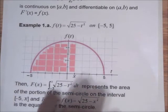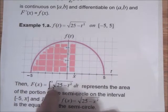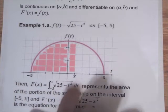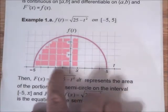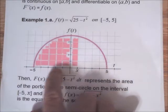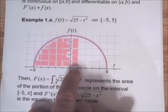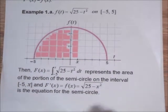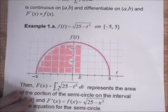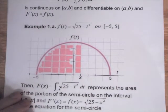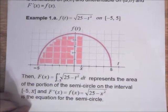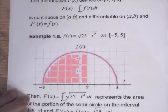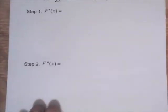The integral capital F of x would be the integral from minus 5 to x of the square root of 25 minus t squared dt, which represents the area under the semi-circle between negative 5 and x. So let's see if we can sketch a graph of capital F. To do that it'll be helpful to take the derivatives.